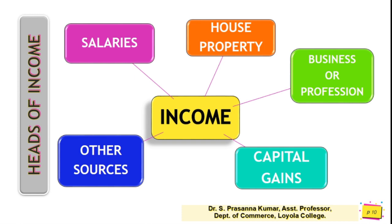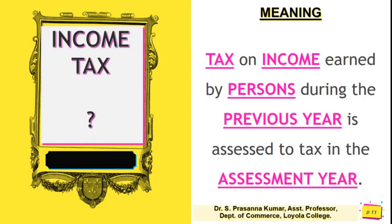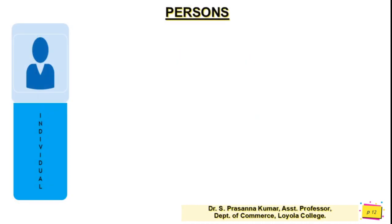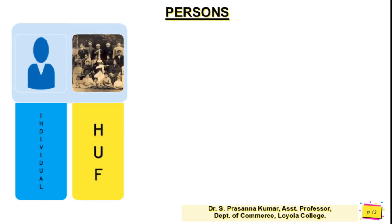Adding all five heads of income gives the gross total income. The third keyword is 'persons.' There are seven types of persons. The first is an individual — you, me, Mr. X, or Mr. Y. The second is a Hindu Undivided Family (HUF) — a large family with grandmother, grandfather, uncles, aunts, parents, and siblings all together.